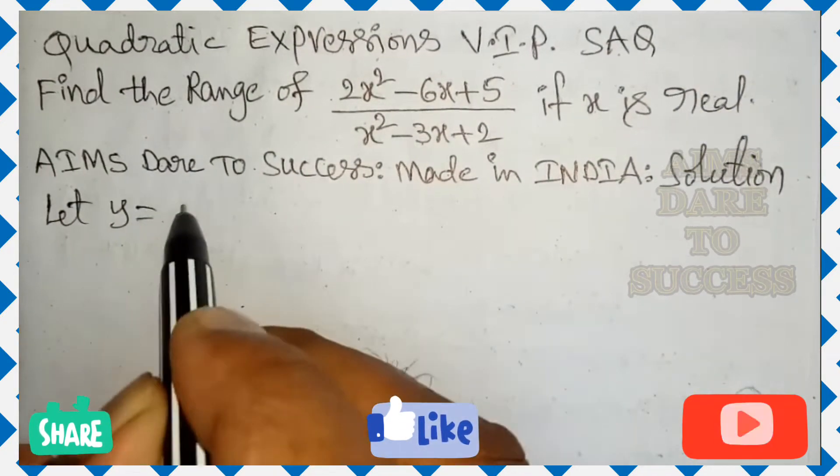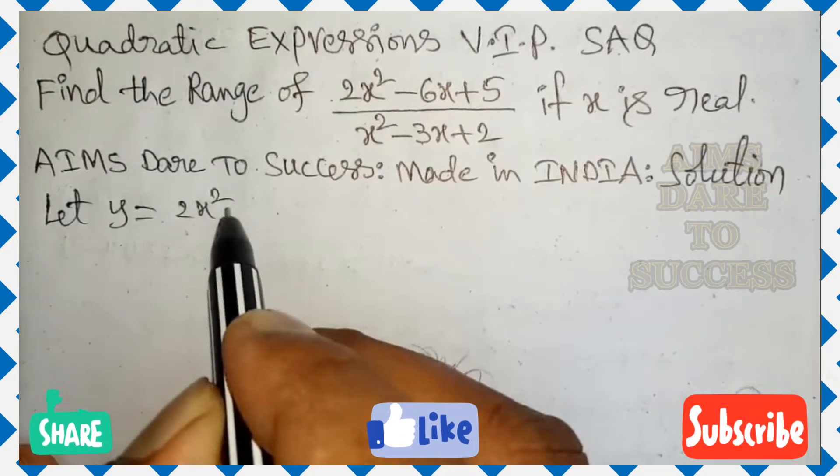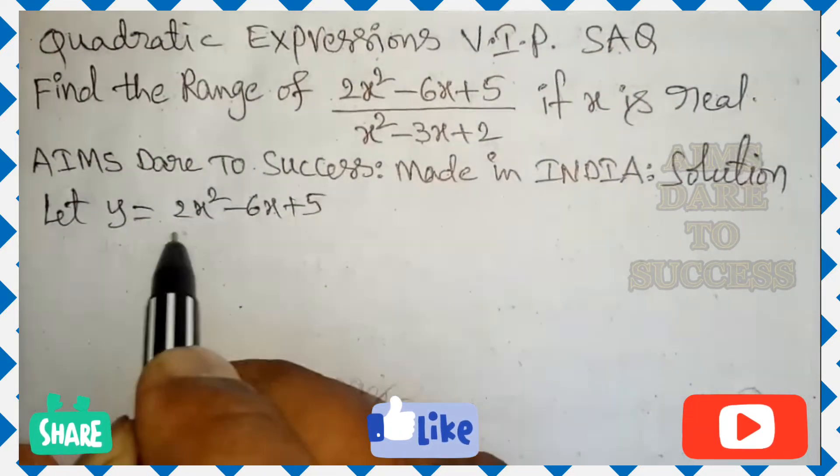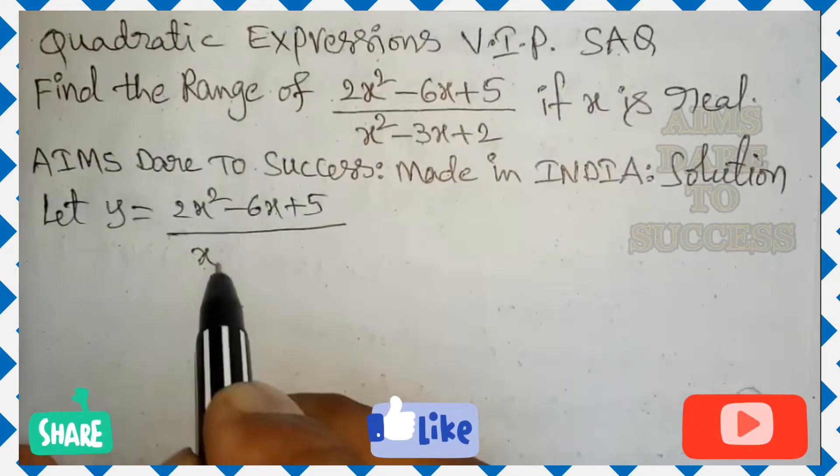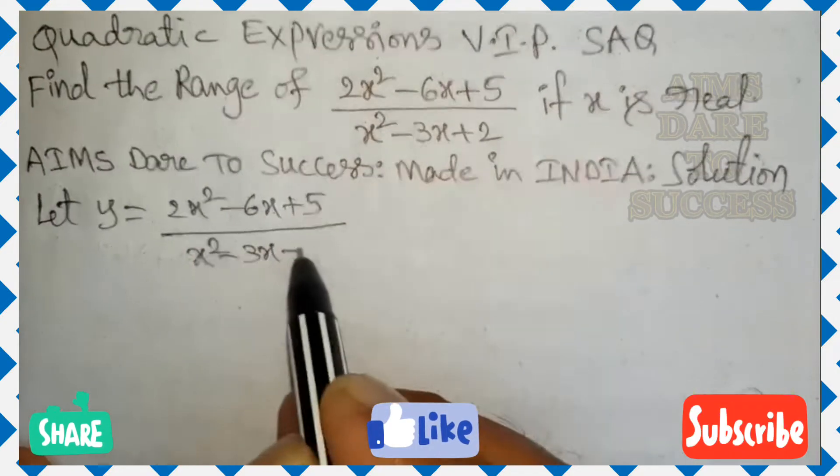Let the given value can be written as y. So, let y is equal to 2x square minus 6x plus 5 by x square minus 3x plus 2. Next,